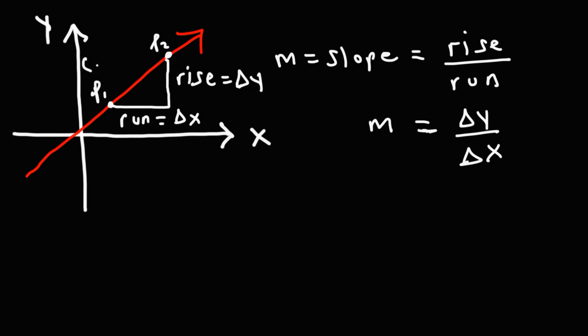Now let's say P1 has the coordinates x1, y1, and point 2 has the coordinates x2, y2. The change in y becomes the difference between the y values of those two points. So delta y is y2 minus y1. Delta x, the change in x, which is the run, is the difference between these two x values. So it's x2 minus x1. And that's how you could derive the slope formula.